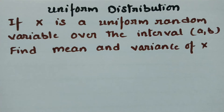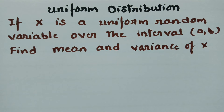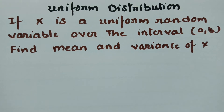Today's topic is uniform distribution. We have to solve: if x is a uniform random variable over the interval (a, b), we need to find the mean and the variance of x.